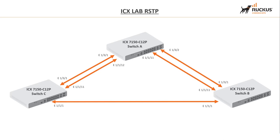Spanning Tree Protocol is there to prevent loops in the network. Broadcast storms are real — if you have a loop and a device connected to a port sends out a broadcast, those broadcasts are sent out every port on the switch except the one it was received on. In a looped topology, broadcasts multiply and multiply, locking up the CPU on your switches and bringing them crashing down. So Spanning Tree Protocol is a loop prevention protocol.